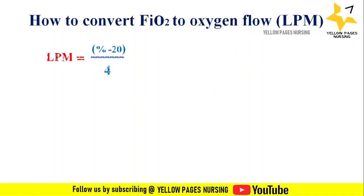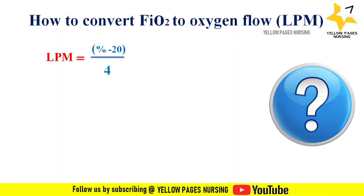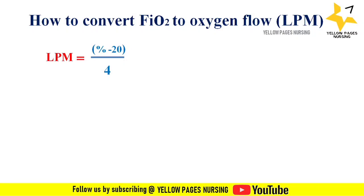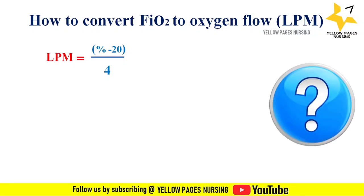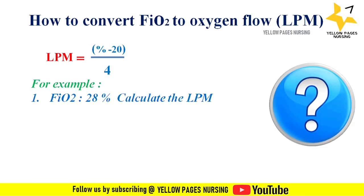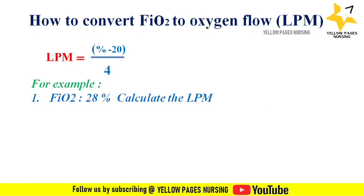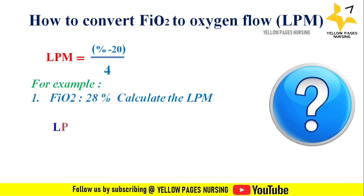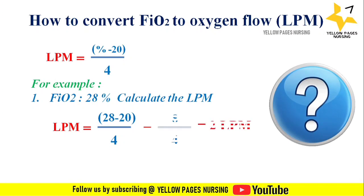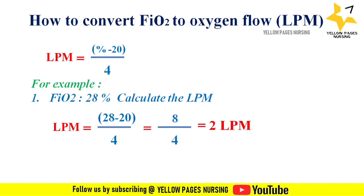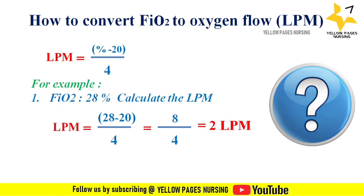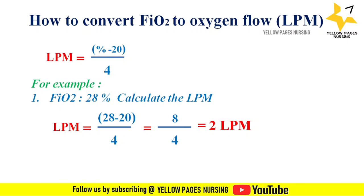How do we convert FiO2 to oxygen flow in liters per minute? The formula is: liters per minute = (FiO2% − 20) ÷ 4. For example, if FiO2 is 28%, then: (28 − 20) ÷ 4 = 2 liters per minute. This is the simple technique to convert between oxygen flow in liters per minute and FiO2, or vice versa.